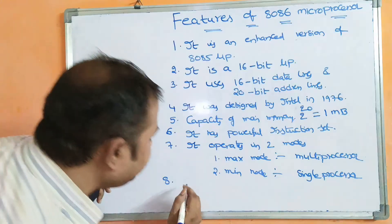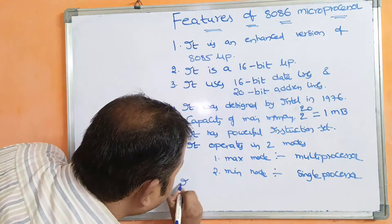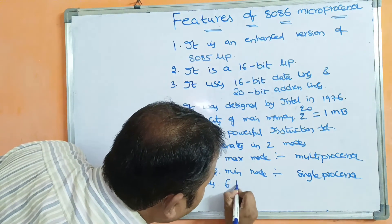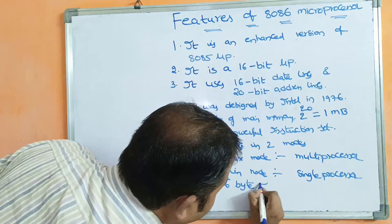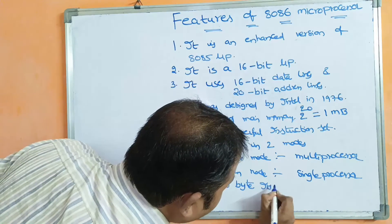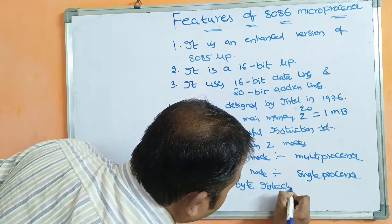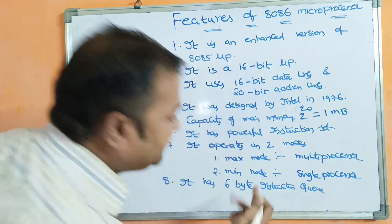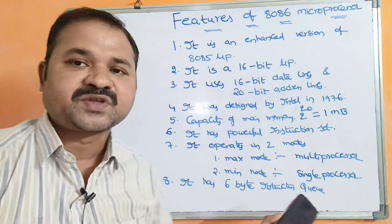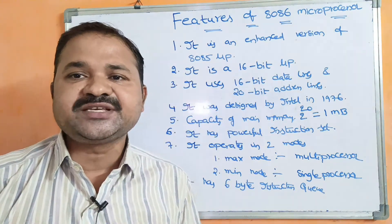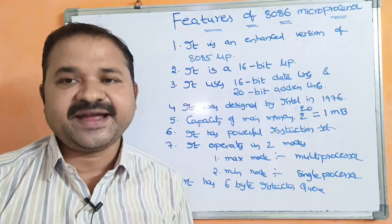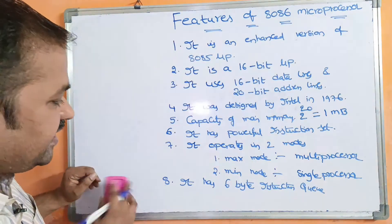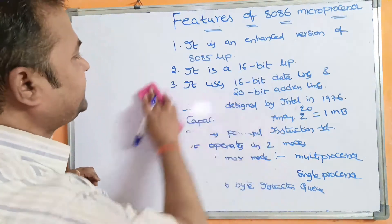The 8086 microprocessor has a 6-byte instruction queue. The size of the instruction queue is 6 bytes, meaning a maximum of 6 bytes can be stored in the queue at a time.